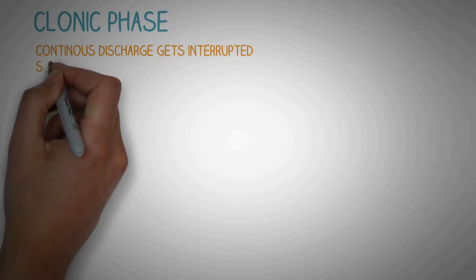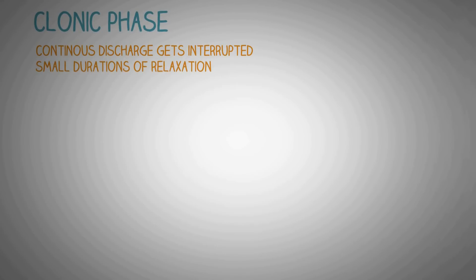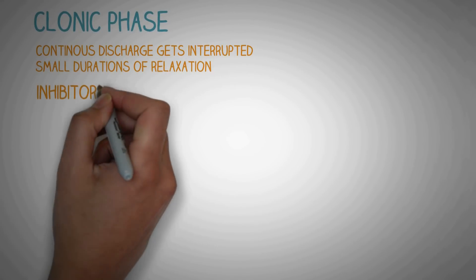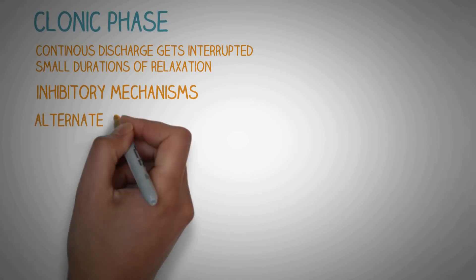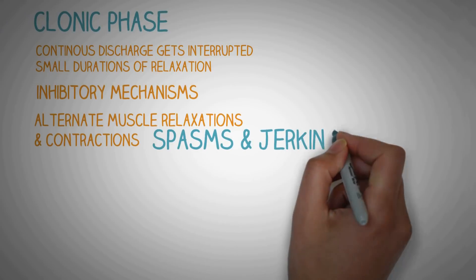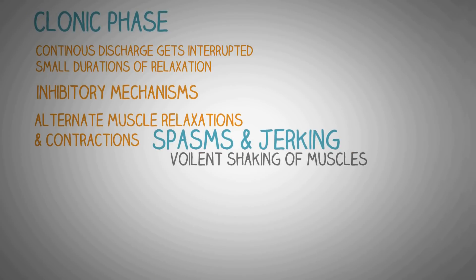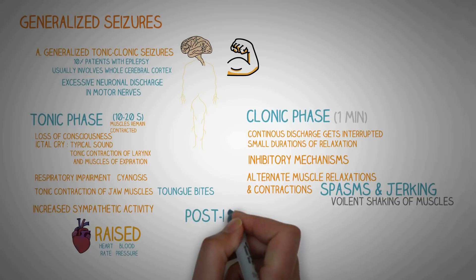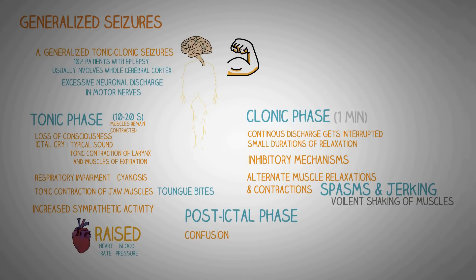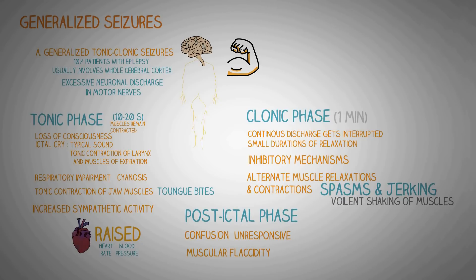In the clonic phase, the continuous discharge from the brain gets interrupted by small durations of relaxation. This occurs because the inhibitory mechanisms of the brain come into play and try to control the widespread neuronal activity. Due to this, there occur alternate muscle relaxations and contractions which cause spasm and jerking, perceived as violent shaking of muscles. The clonic phase usually lasts for only one minute and then transforms into the post-ictal phase. The post-ictal phase is characterized by confusion, unresponsiveness, and muscular flaccidity. The patient usually remains in the post-ictal phase for one or two hours, after which he gradually returns to normal.